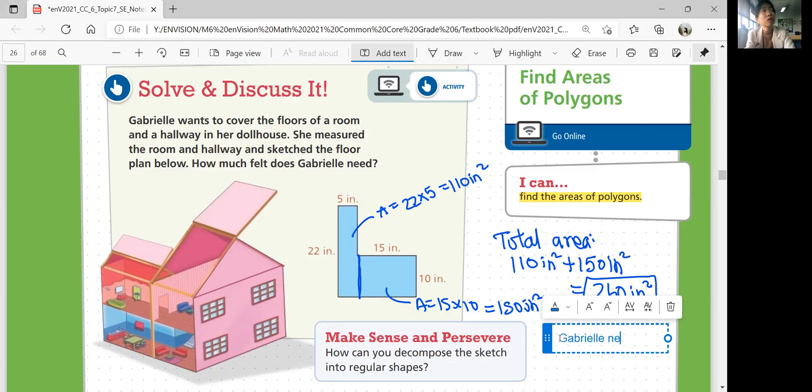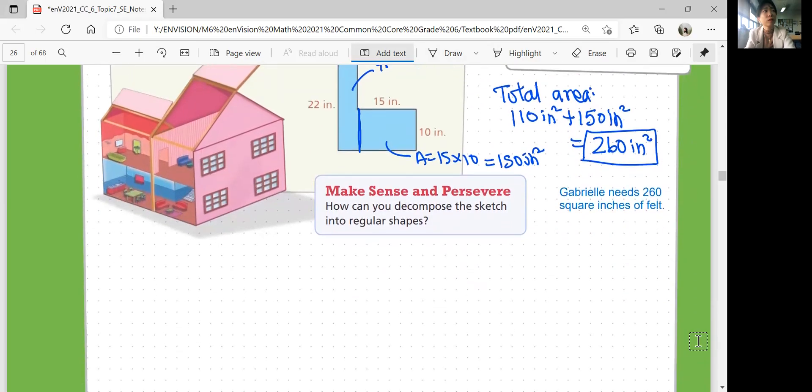So Gabrielle needs 260 square inches of felt is the final answer.